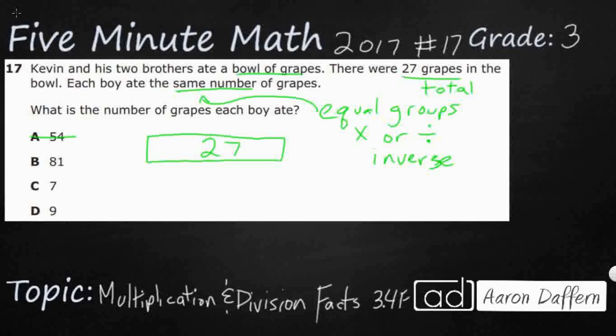So I already know just by reading, it can't be 54. We'll look at how we get that number. And it can't be 81. A boy cannot eat 54 or 81 grapes if there are a total of 27. So the number is going to be smaller. It's got to be seven or nine.